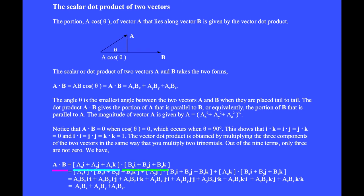Multiplying trinomials and including the dot product, we have the first term: Ax î dot (Bx î + By ĵ + Bz k̂). Then the middle term: Ay ĵ dotted with each of those three. And then the third term: Az k̂ dotted with each of those three.